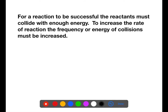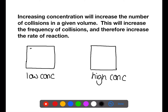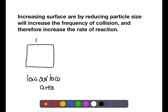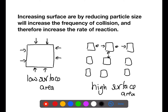Increasing concentration increases the number of collisions in a given volume. This will increase the frequency of collisions and therefore increase the rate of reaction. Increasing surface area by reducing the particle size will also increase the frequency of collisions and therefore increase the rate of reaction.